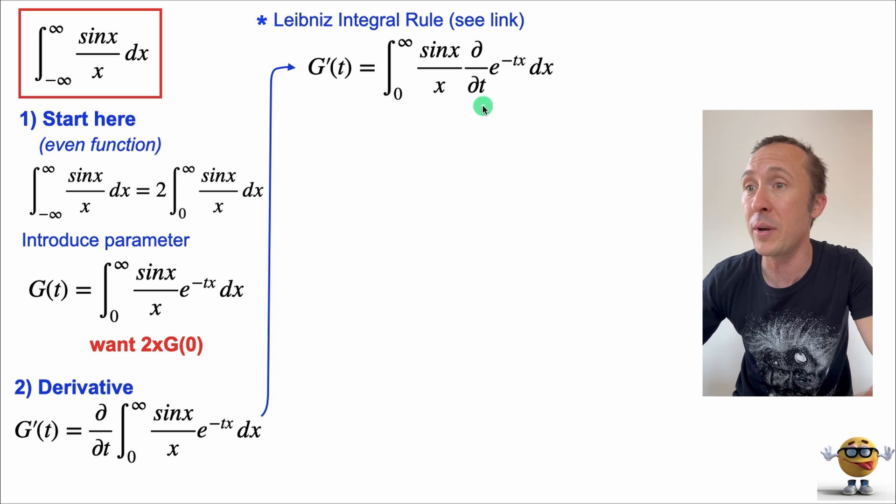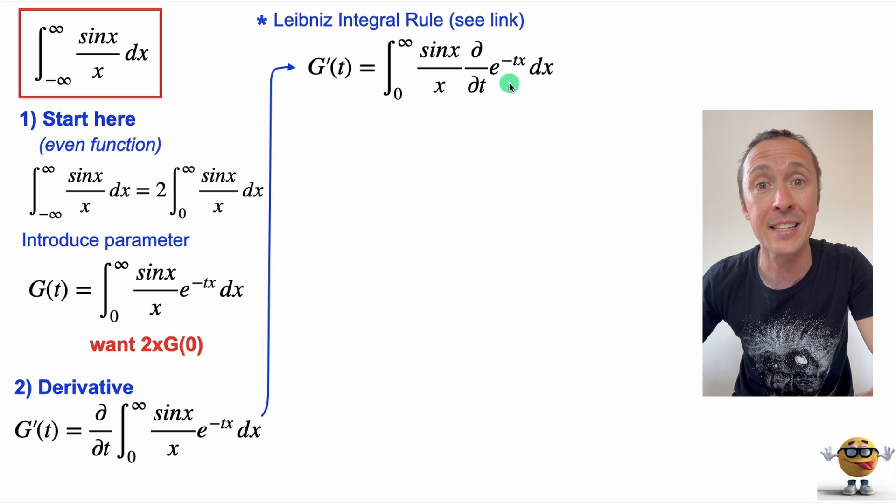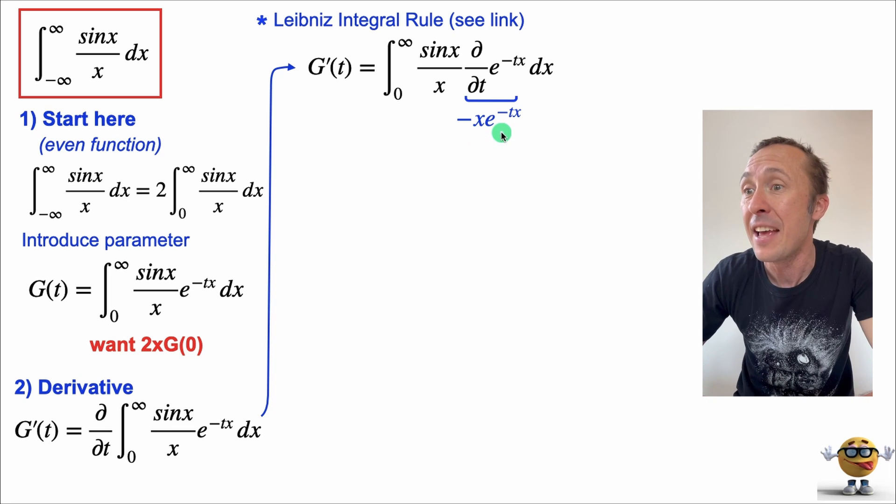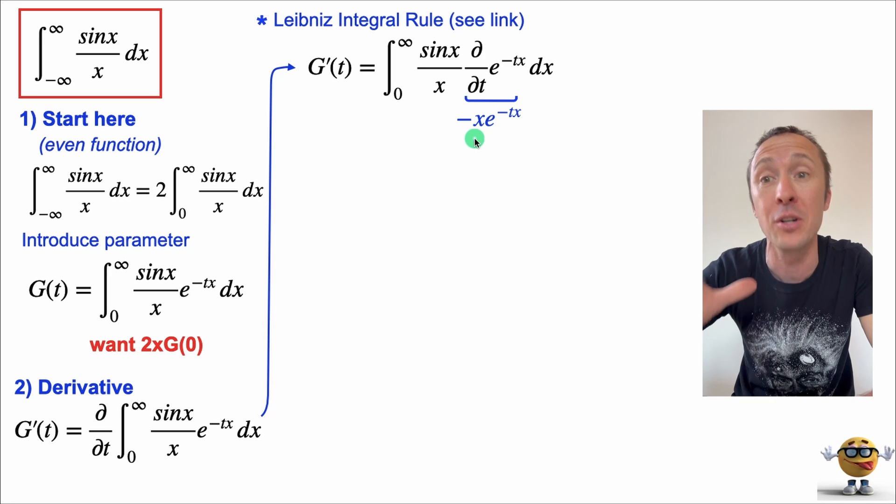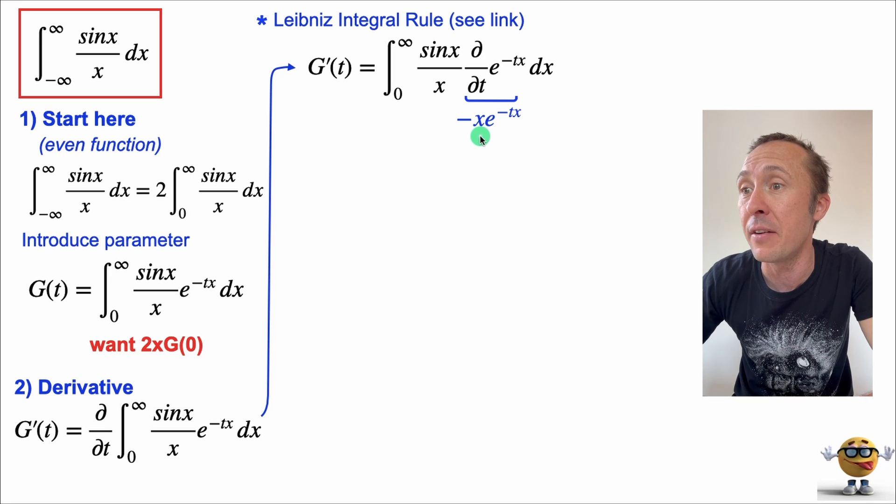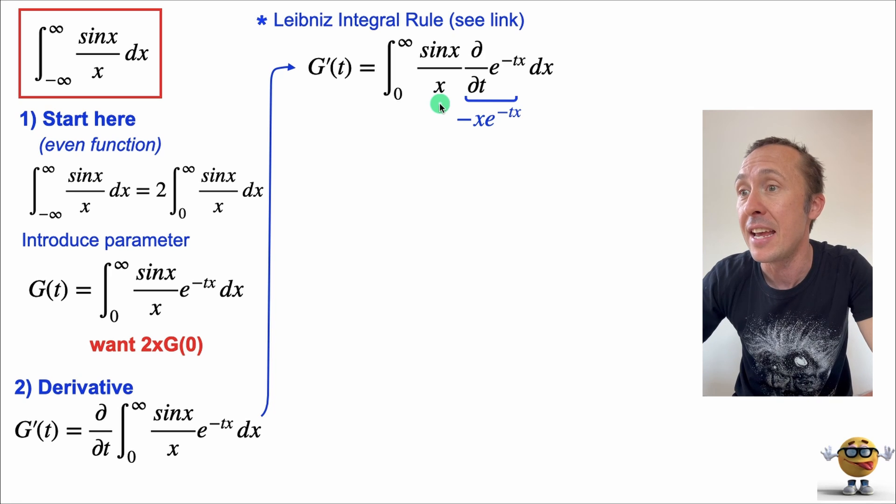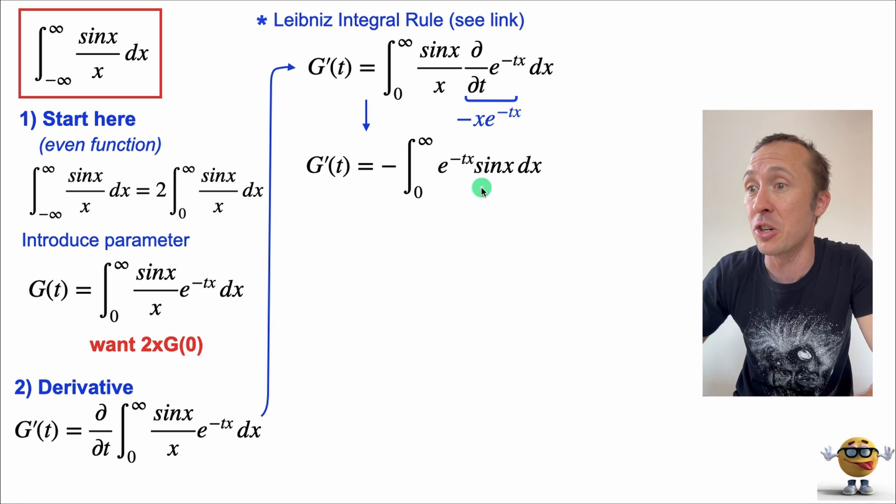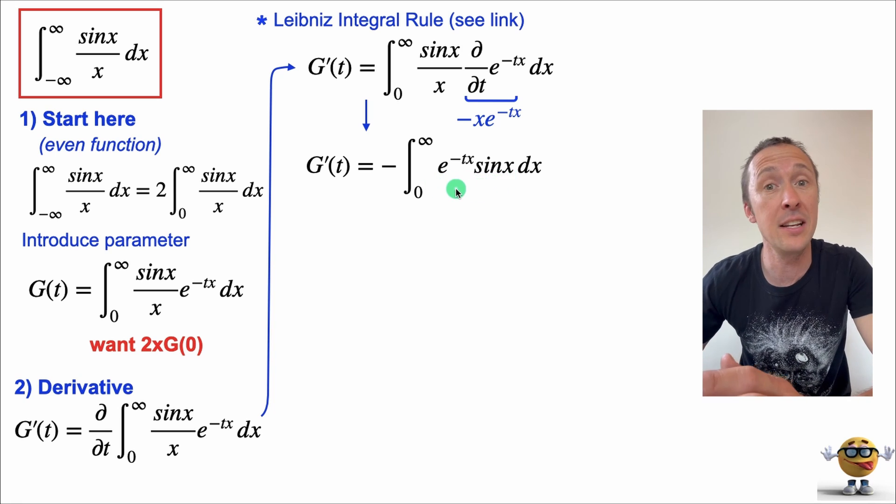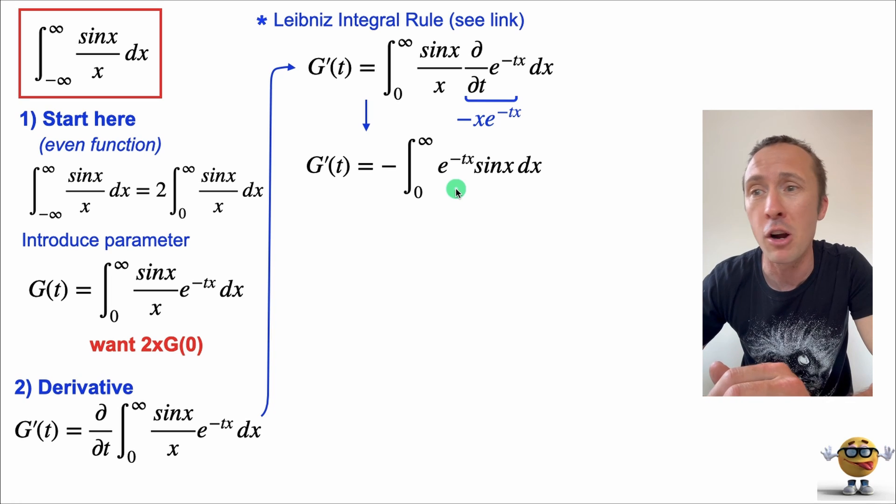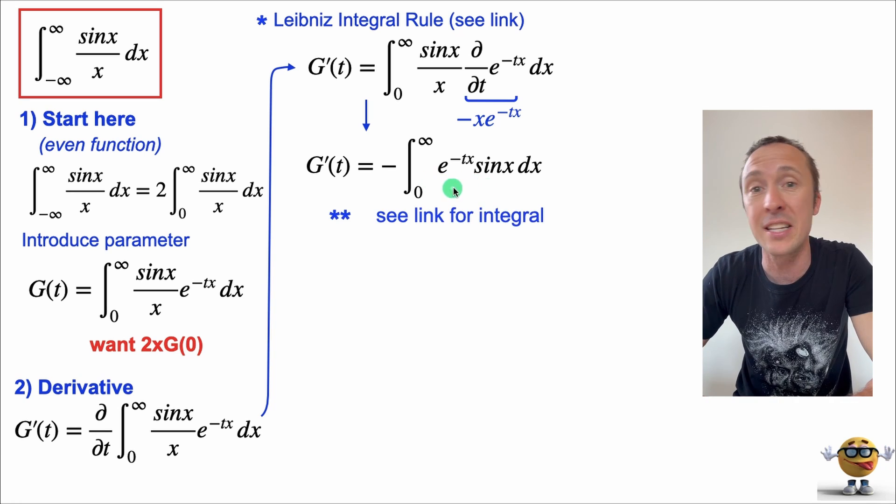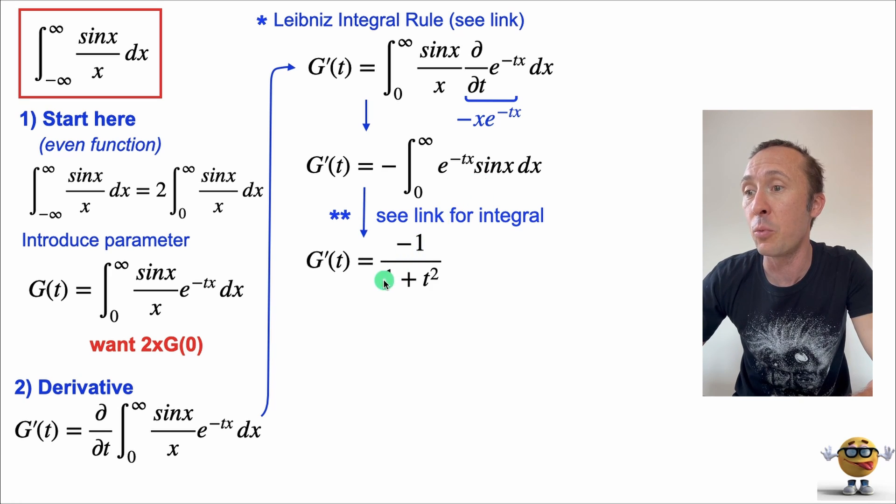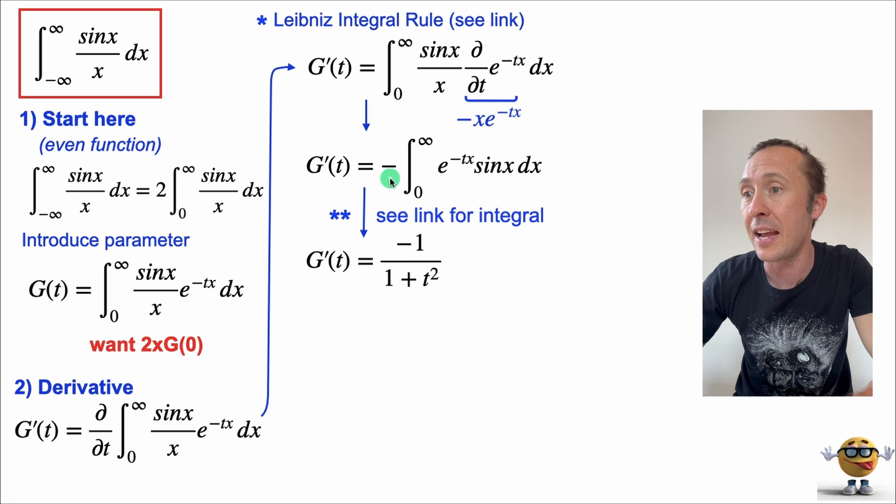So this, we can do. We can take the derivative of this e to the negative tx. That's our friend from calc 1. So that's negative x e to the negative tx. And my friends, if you look at this, this is the whole reason we introduced the parameter. Like this x here, now that we took the derivative, this x cancels with this x in the denominator. So that, we're left with this. We're left with an integral that we know how to integrate. This, you may have done in calc 2. This is like an integration by parts integral that we can do. I've gone through this integral a number of different ways. You can check that out if you want. This integral becomes negative 1 over 1 plus t squared. The negative is just the negative right from here.